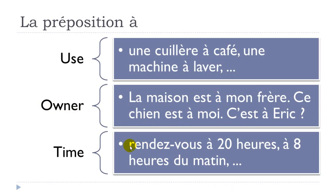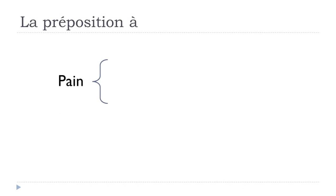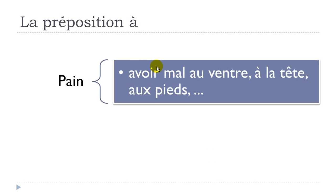For time, use à: Rendez-vous à 20 heures — let's meet at 8pm. À 8 heures du matin, for instance. For body pain, the expression is avoir mal + à. Avoir mal au ventre (stomachache — ventre is masculine, so à+le = au). Avoir mal à la tête (headache — tête is feminine). Avoir mal au pied (foot pain). The article changes depending on gender.